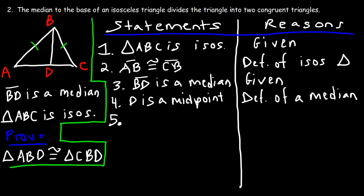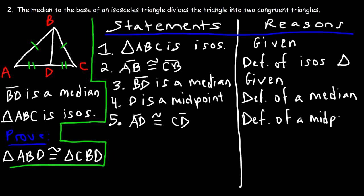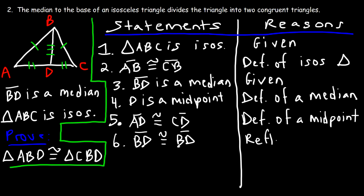Now that we know D is a midpoint, what other conclusions can we draw? If D is the midpoint, then AD is congruent to DC. The reason for this is the definition of a midpoint. In statement six, BD is common to both triangles, so BD is congruent to BD — that's the reflexive property.